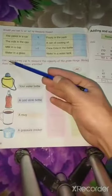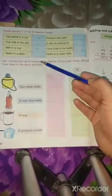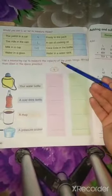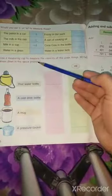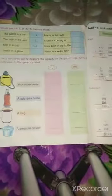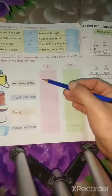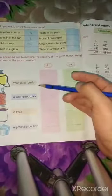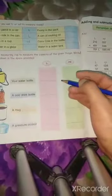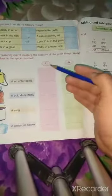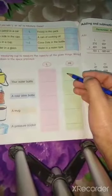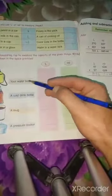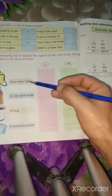Next is, use a measuring cup to measure the capacity of the given things. Write them down in the space provided. So, यहां पर हमारे पास कुछ objects दिए हैं. इनकी cup की help से measurement करके बताना है कि इनमें कितना water आता है.